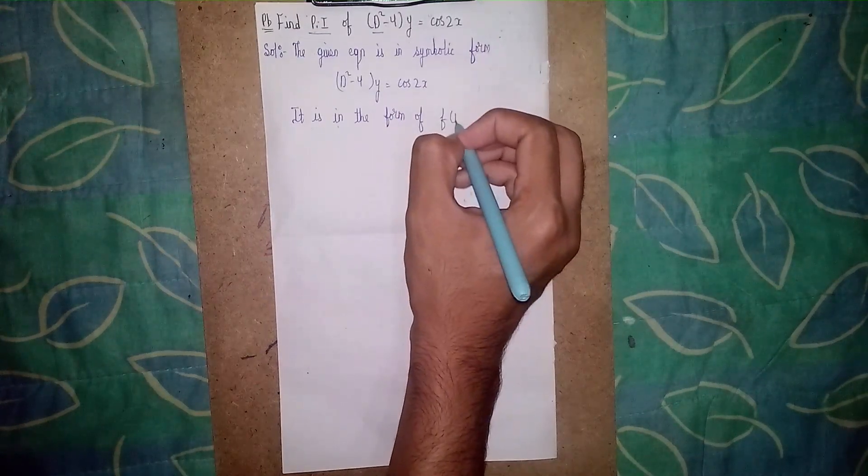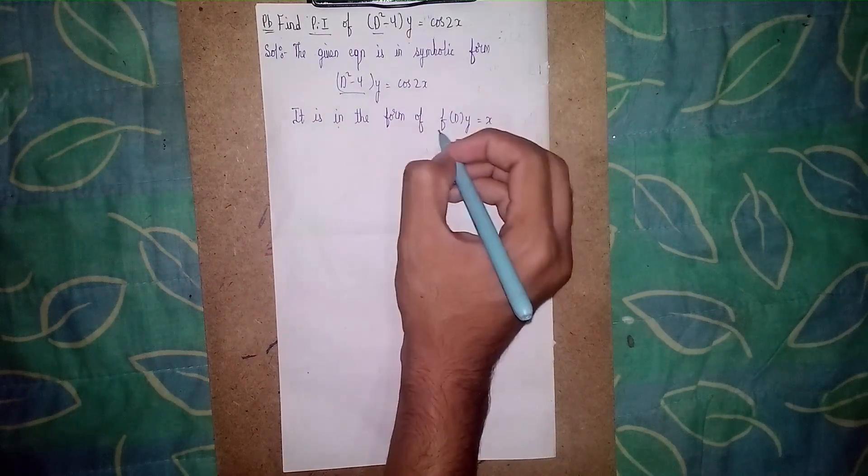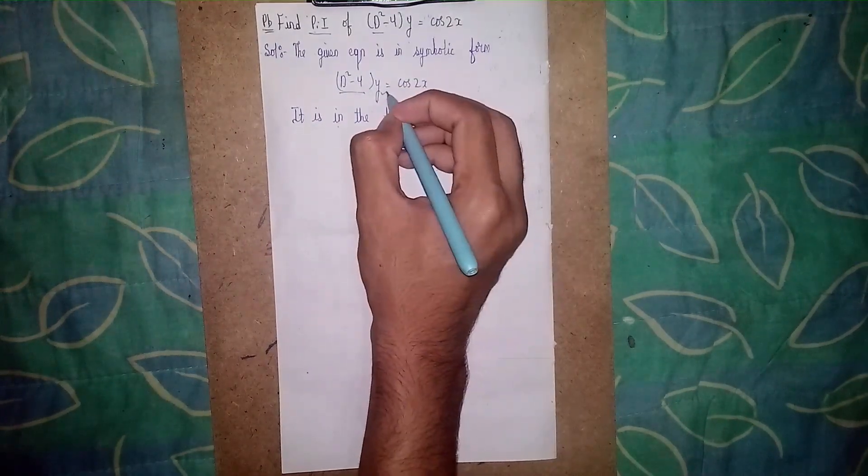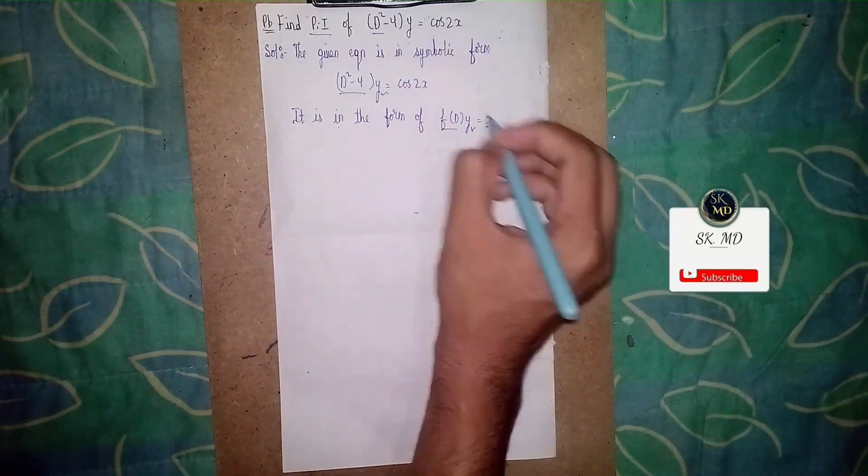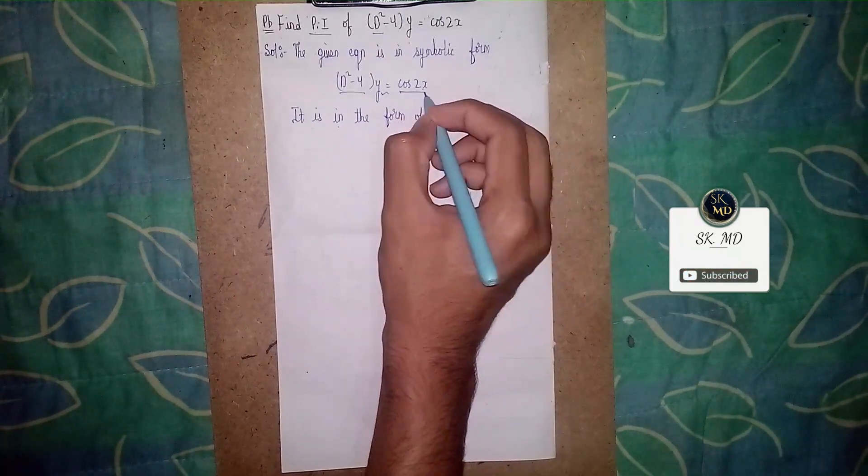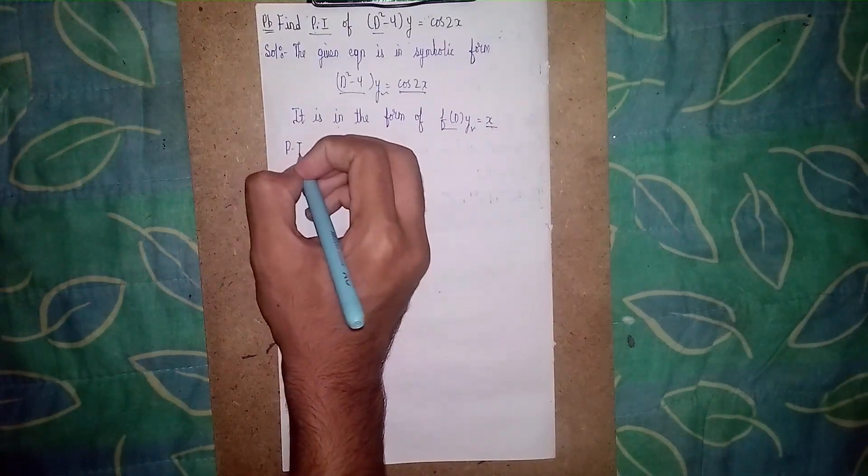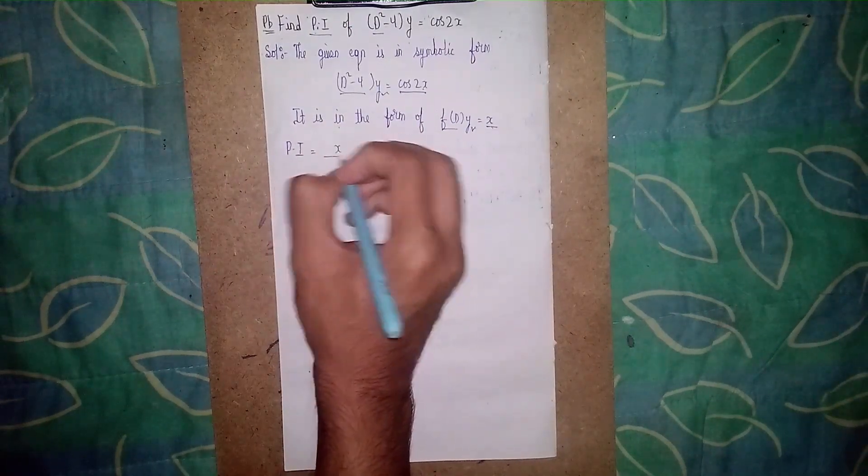This X means not x variable, this whole function is X. Don't get confused. So particular integral PI is equal to X by f(D). Okay, so what is our X? X is cos 2x. So cos 2x by D² - 4.